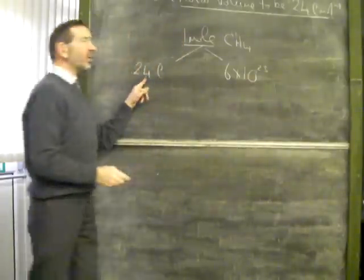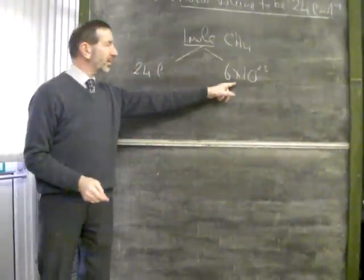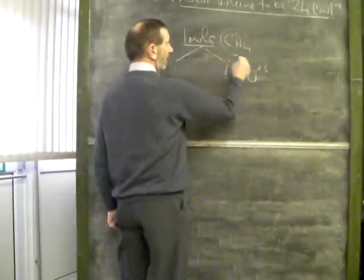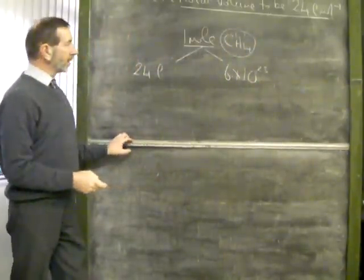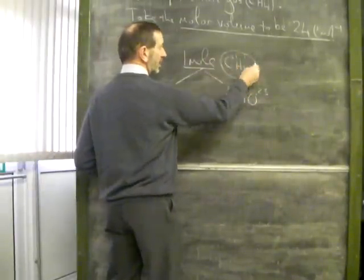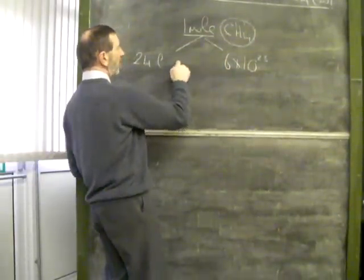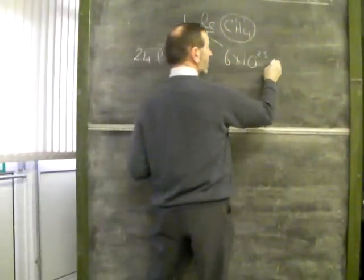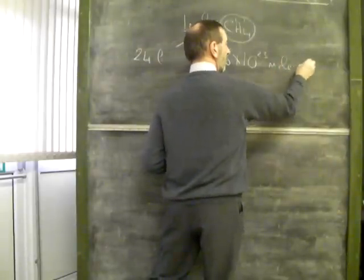In 24 liters of methane, there's Avogadro's number of, well, look at the formula. Look at the formula unit. We're not dealing with atoms. We're dealing with molecules, little packages. So with one mole of methane, we have Avogadro's number of these molecules.